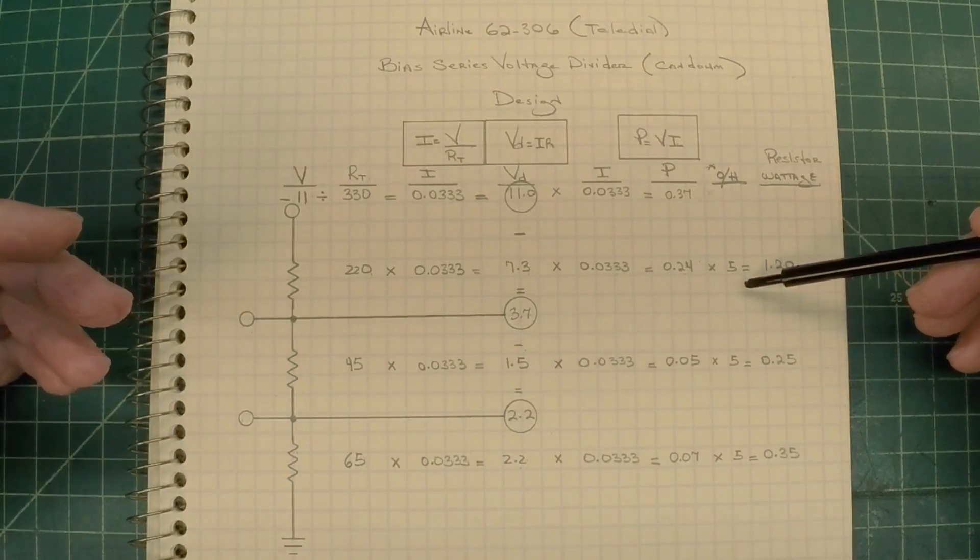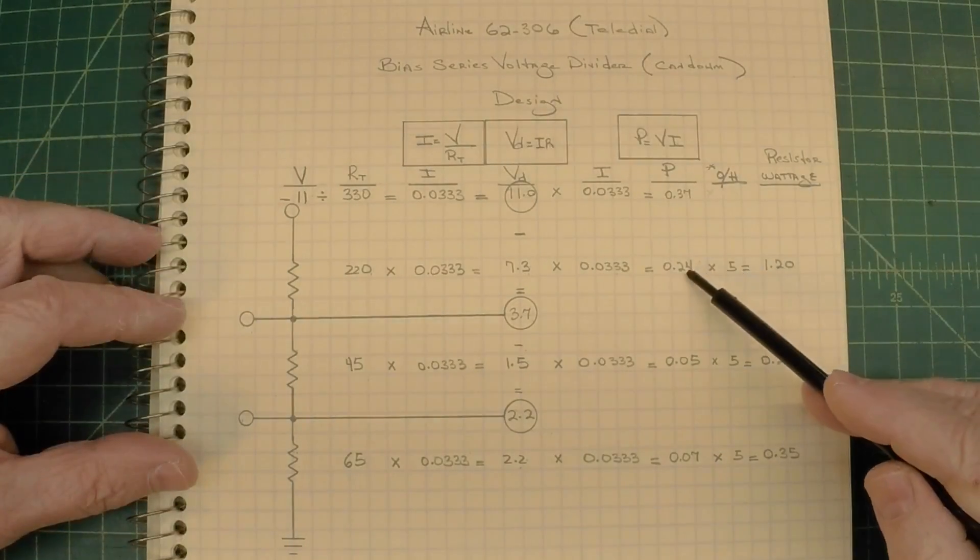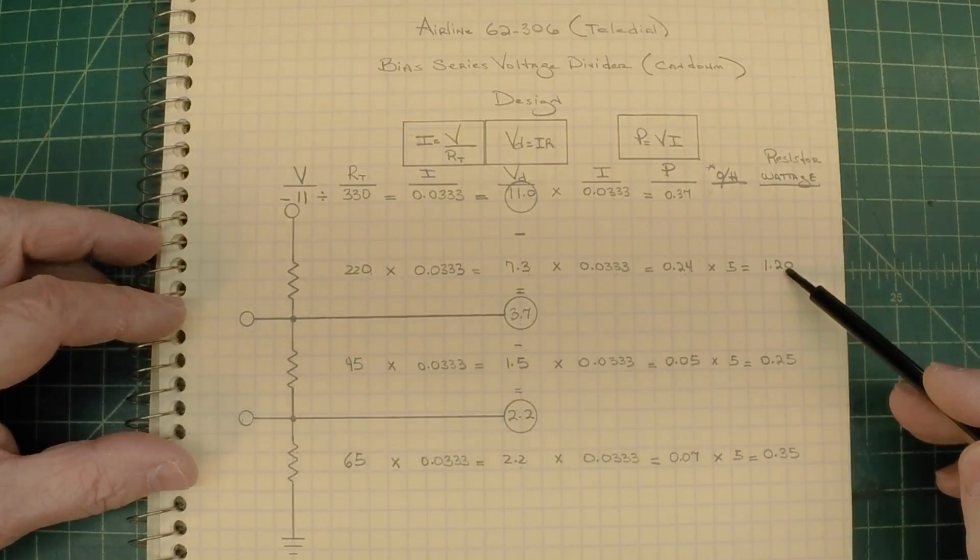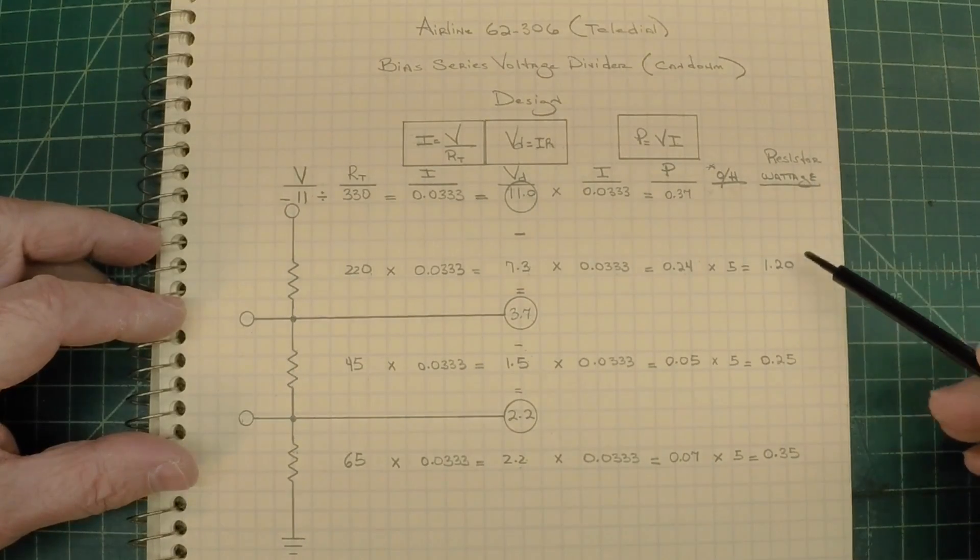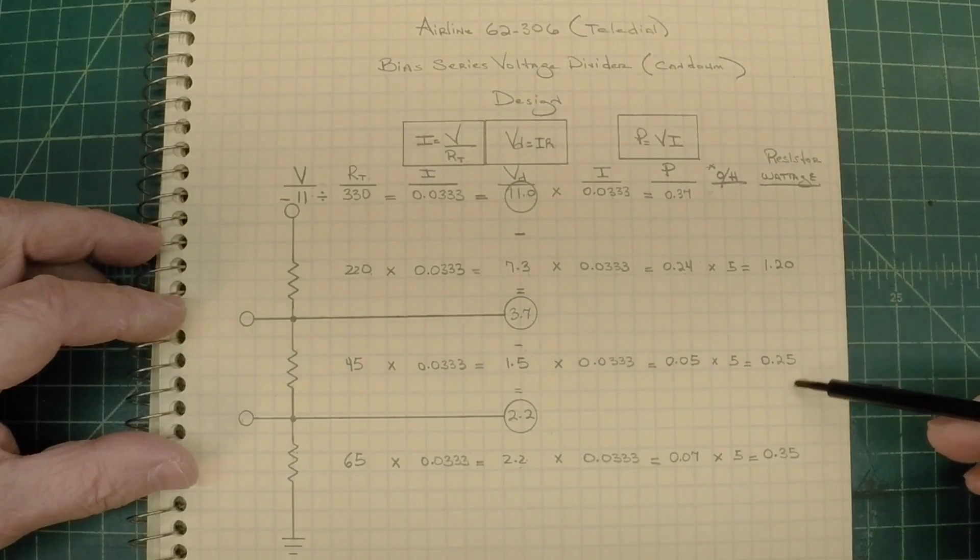Now you need an overhead factor because that's just the basic rating of the resistor itself. So I like using times 5 for terminal mounted resistors. So you can see I've done the math in this column. That would give me a resistor wattage requirement, just over a 1 watt, 1.2, 0.25, 0.35.